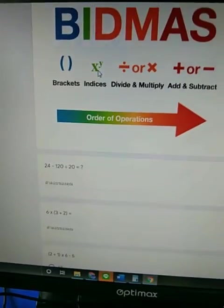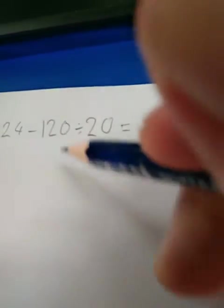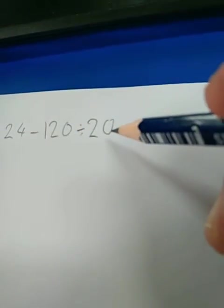So I'm just going to write out 24 minus 120 divided by 20 equals. So now we've got our sum written out. Let's think about our order of operations. So we've got brackets. Any brackets? No. Indices? Any indices? No. Do we have division or multiplication? Ah yes we do. So let's do our division slash multiplication first.